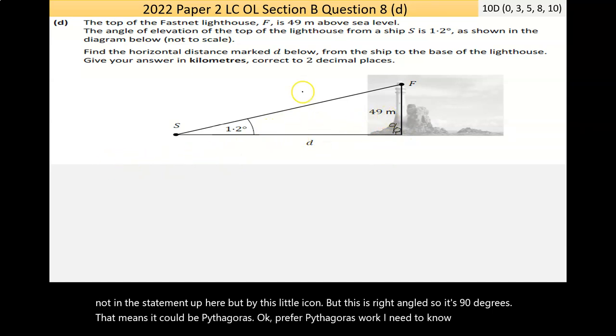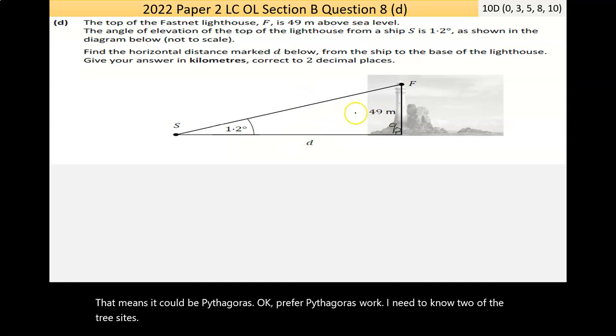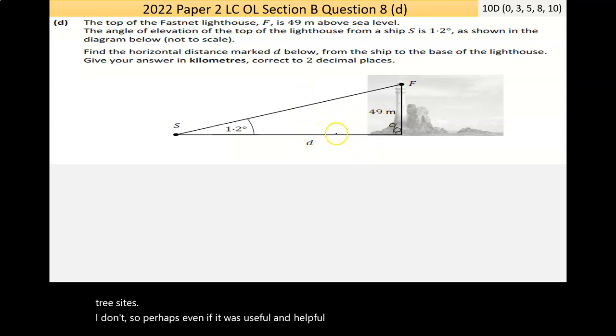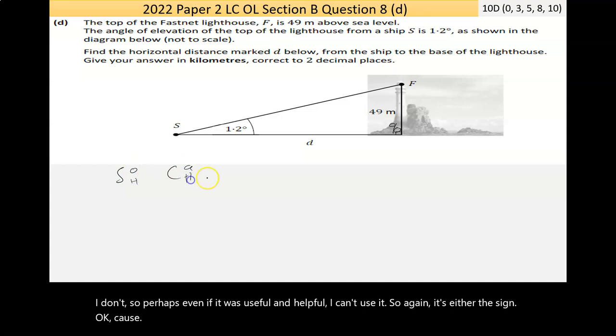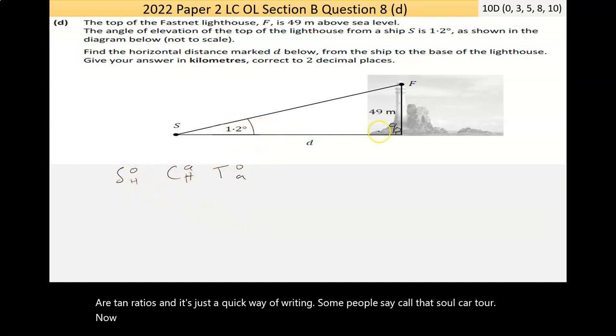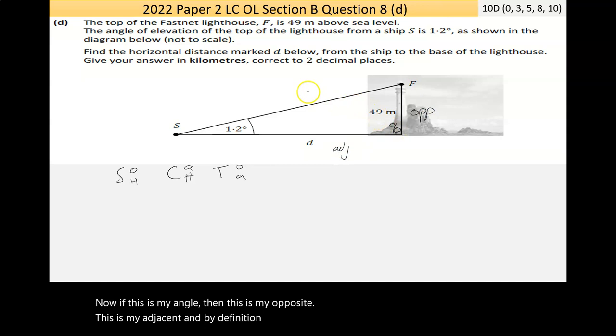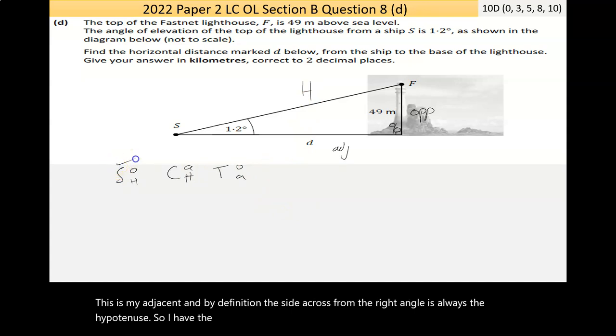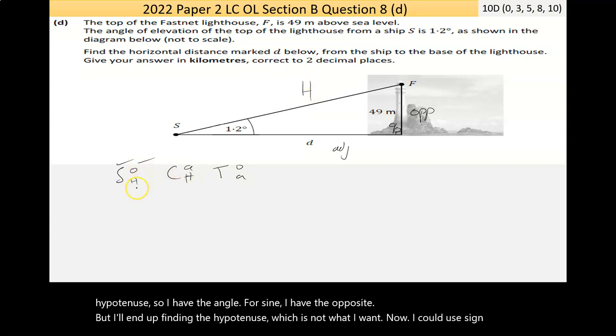That means it could be Pythagoras. Now, for Pythagoras to work, I'd need to know two of the three sides. I don't. So, Pythagoras, even if it was useful and helpful, I can't use it. So, again, it's either the sine, cos, or tan ratios. And it's just a quick way of writing. Some people say, call that so-ka-toa. Now, if this is my angle, then this is my opposite. This is my adjacent. And by definition, the side across from the right angle is always the hypotenuse. So, I have the angle, for sine. I have the opposite, but I'll end up finding the hypotenuse, which is not what I want. Now, I could use sine and then use Pythagoras, but that's an extra step. So, I'm going to put, I can use that, I'm just not going to. I'm going to see, will any of the other two ratios work?